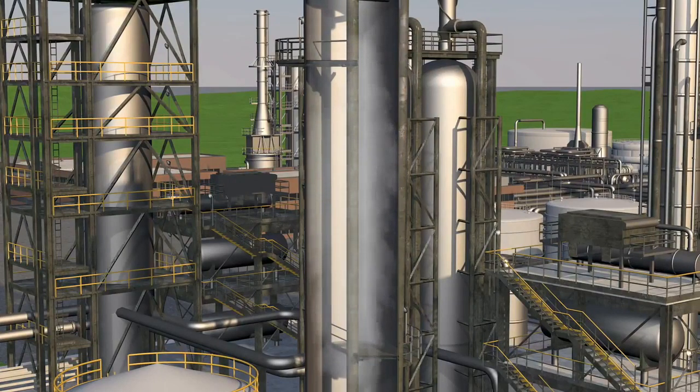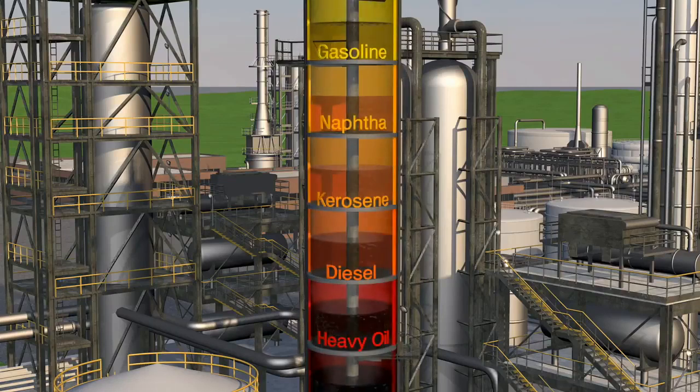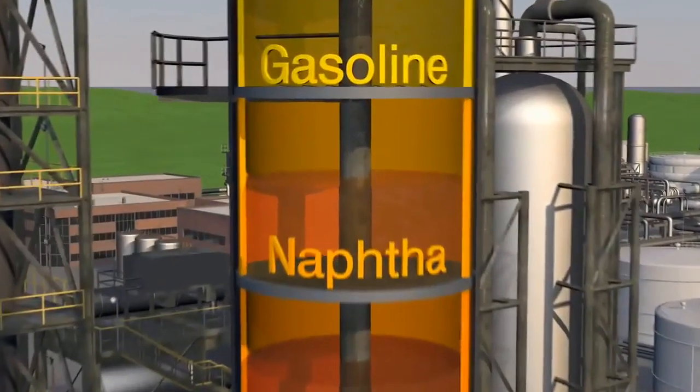As it rises and cools, the vapor turns back into a liquid. Using stacks of trays, the liquid is easily collected and separated by weight.